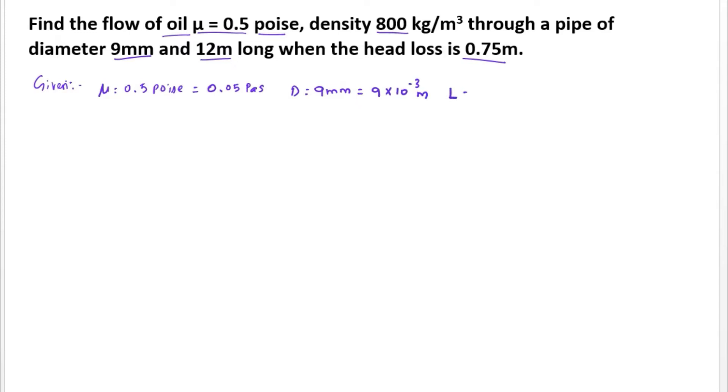Length L equal to 12 meter. Head loss HF equal to 0.75 meter. Density rho equal to 800 kg per meter cube. These are all the given values.